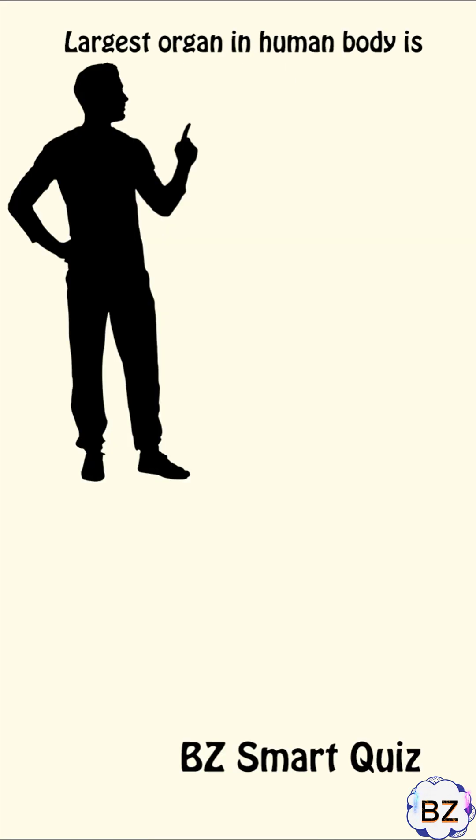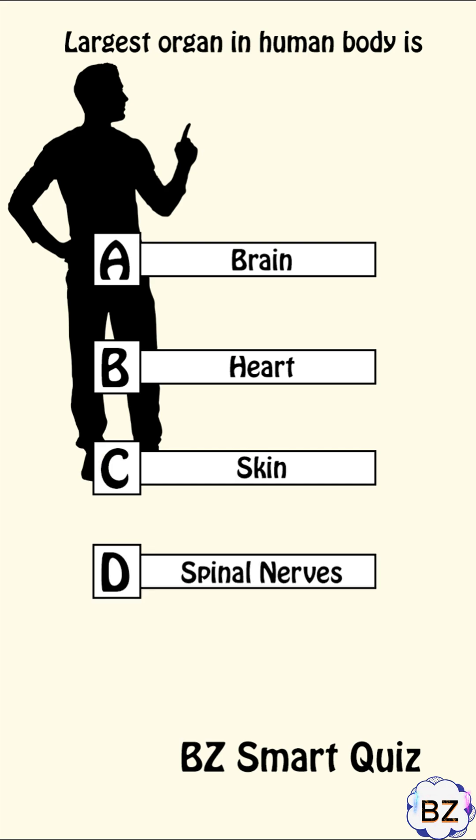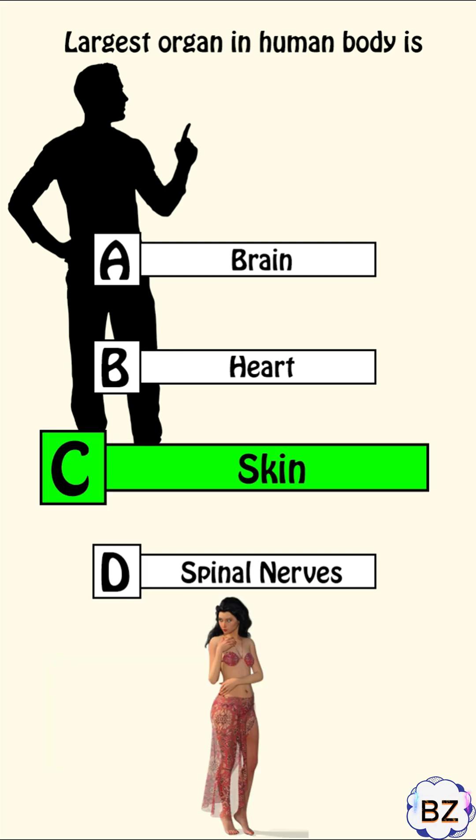Largest organ in human body is? A. Brain, B. Heart, C. Skin, D. Spinal nerves. Correct answer: C. Skin.